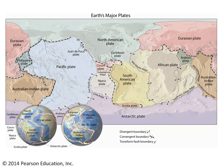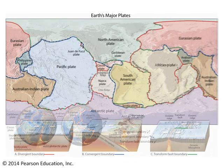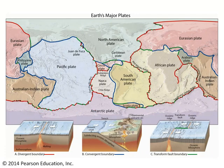You'll recall that the outermost rocky layer of the Earth, the lithosphere, is broken into a series of plates, and these plates move around with respect to one another. The boundaries between the plates can be sites where the plates are moving apart from one another — we call these divergent boundaries — where they're moving towards one another, convergent boundaries, or where they're simply sliding past one another, and these are called transform plate boundaries.